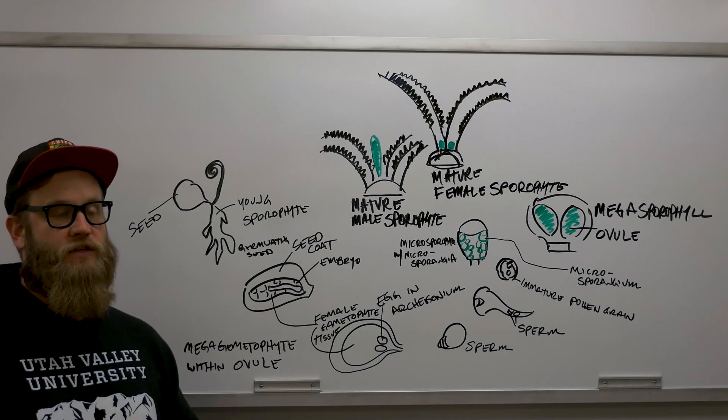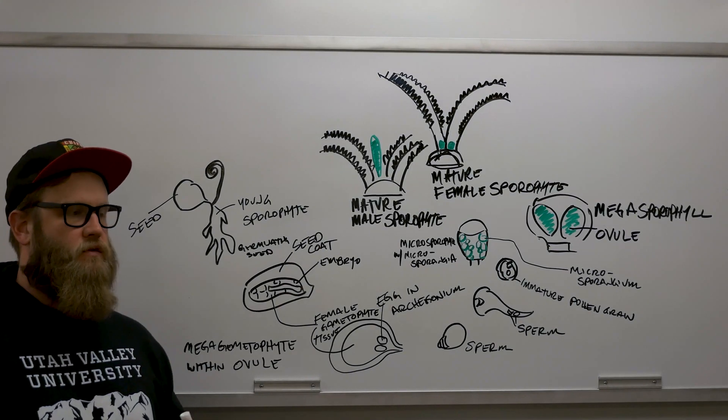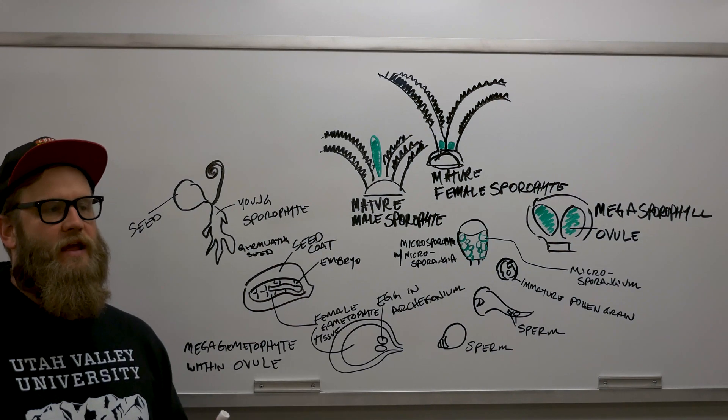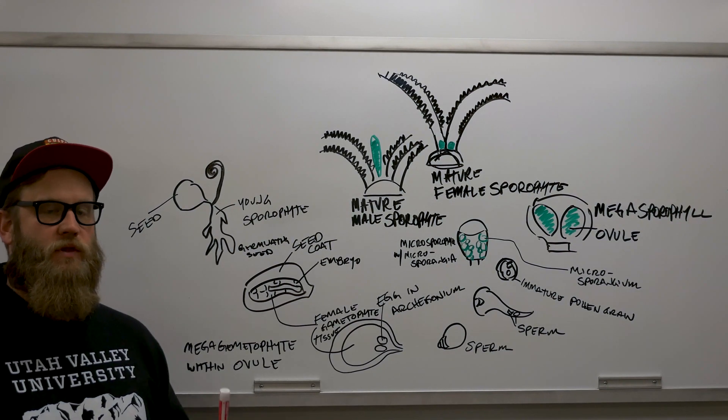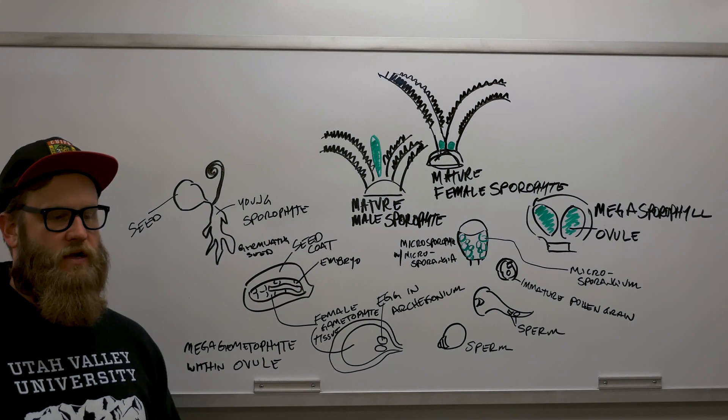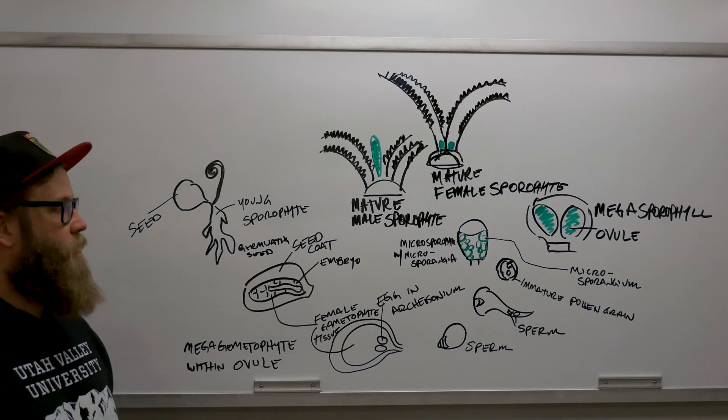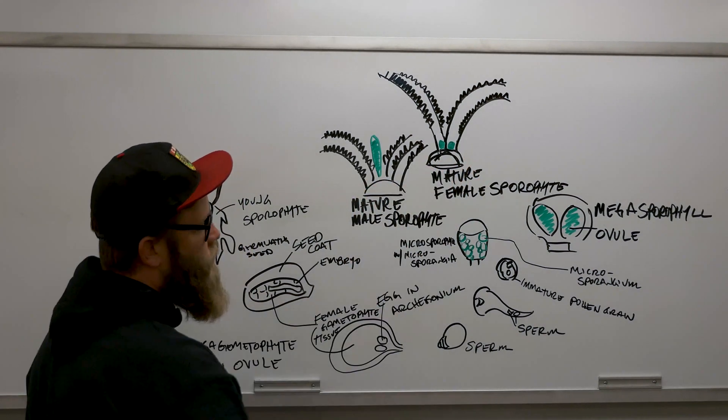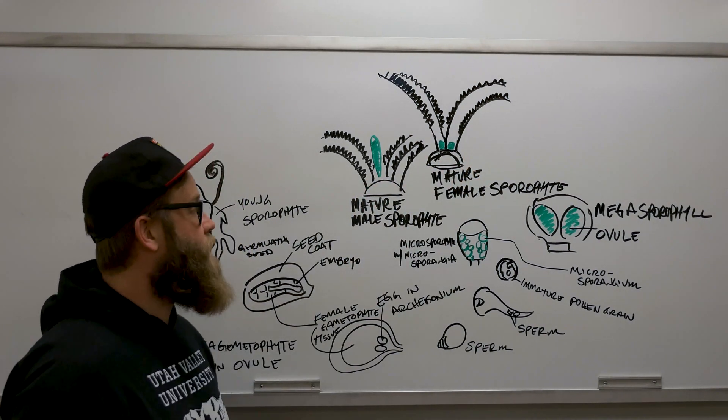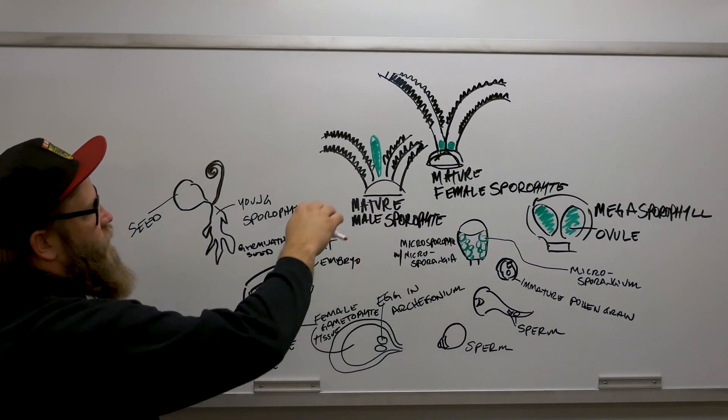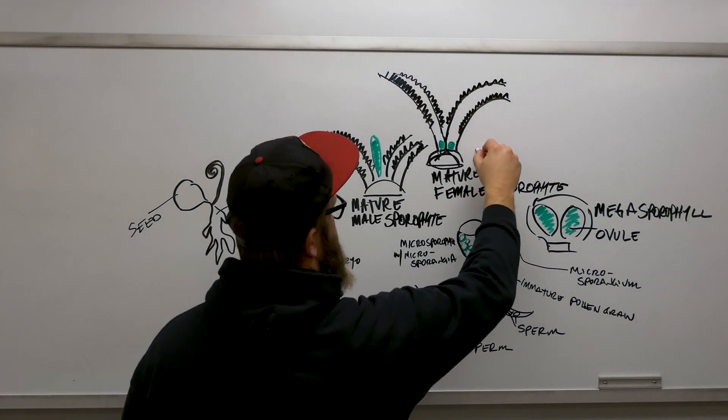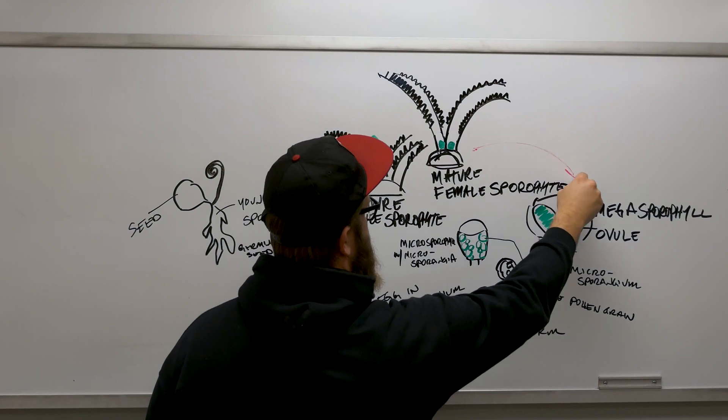Okay, let's talk about the life cycle of a cycad. It's pretty straightforward, though there are a few places where you might get caught up. Let's start in this mature sporophyte stage. We've got a male and a female sporophyte, and we'll start with this female sporophyte.